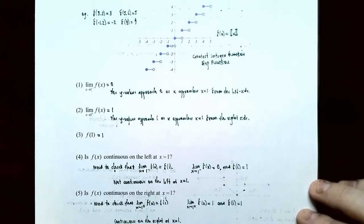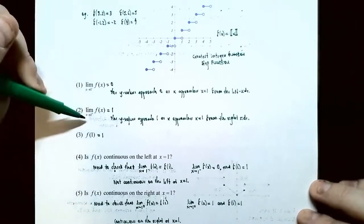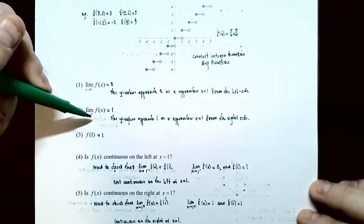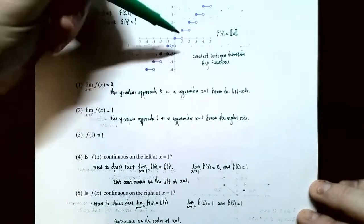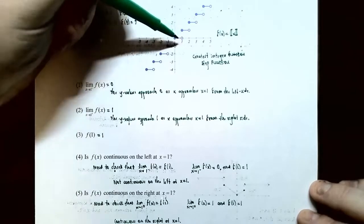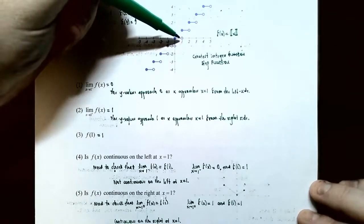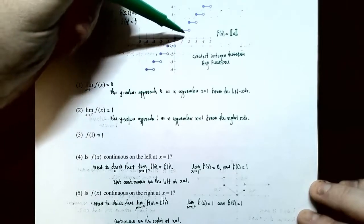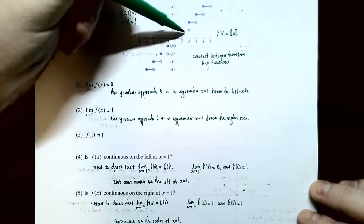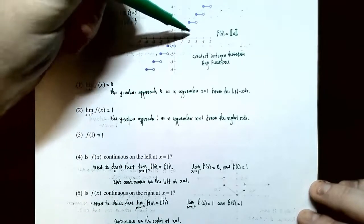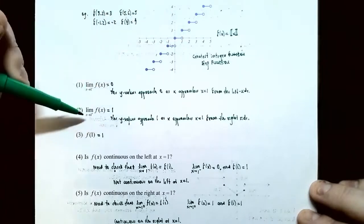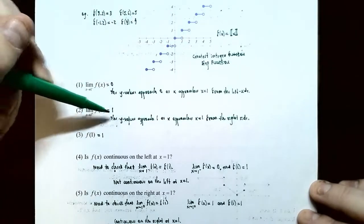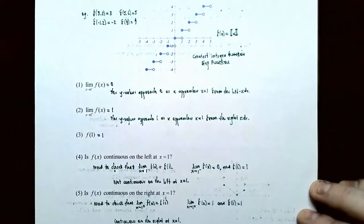Number 2: The limit as x approaches 1 from the right side of f(x). On the right side of x equals 1, you're on the part of the graph where the y values are actually approaching y equals 1. So as x approaches 1 from the right, the y values are approaching 1.